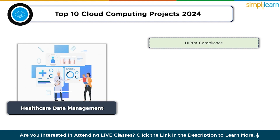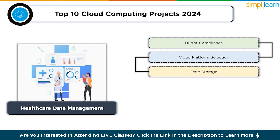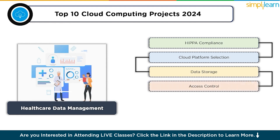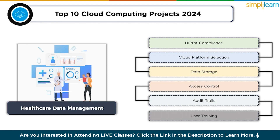Choose a HIPAA-compliant cloud platform such as AWS Healthcare APIs or Azure for Healthcare. Create a secure cloud-based data storage system for healthcare records, implement strict access controls and encryption for data security, maintain audit trails for data access and modifications, and ensure staff are trained on HIPAA compliance and data handling protocols.